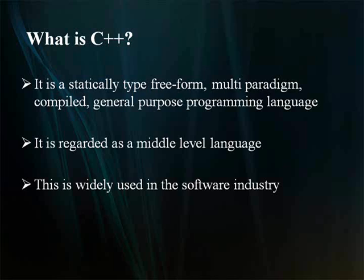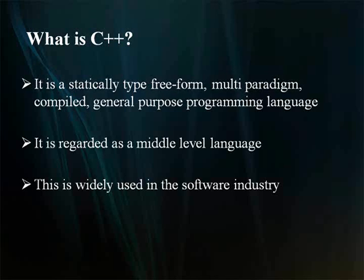What is C++? C++ is a statically typed, free-form, multi-paradigm, compiled, general-purpose programming language. It is regarded as a multi-level language as it comprises a combination of both high-level and low-level language features. This is widely used in the software industry. Some of its application domains include system software, application software, device drivers, and embedded software.